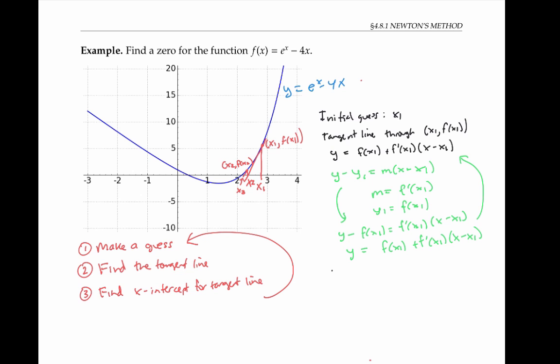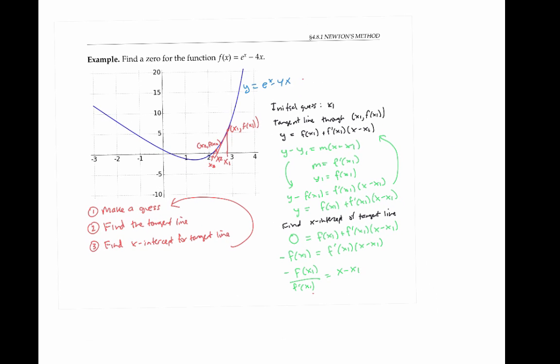Now, if we want to find the x-intercept of the tangent line, we just set the tangent line equation equal to zero, so we have 0 = f(x₁) + f'(x₁)(x - x₁), and we solve for x. We can subtract f(x₁) from each side, divide by f'(x₁), and solve for x. We're calling this new x-intercept x₂. So x₂ = x₁ - f(x₁)/f'(x₁).